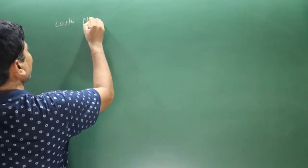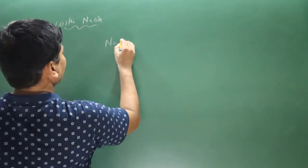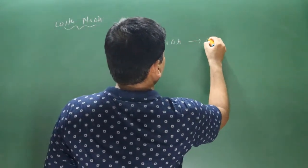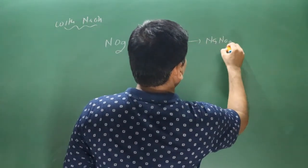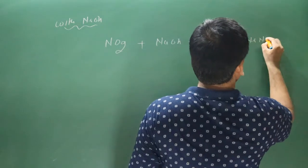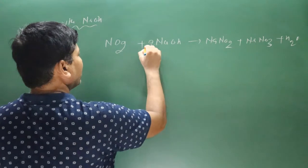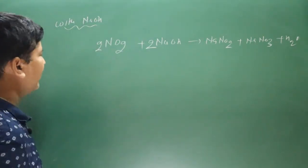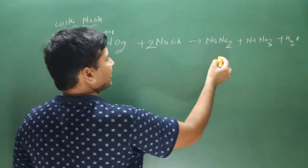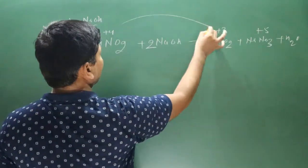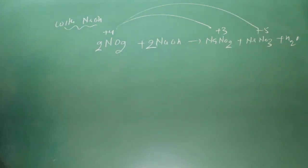The next reaction is with a strong base (NaOH). Nitrogen dioxide reacts with a strong base and undergoes a disproportionate redox reaction, producing NaNO2, NaNO3, and water. Nitrogen is in the +4 oxidation state in NO2, goes to +3 in NaNO2 (reduction) and +5 in NaNO3 (oxidation).